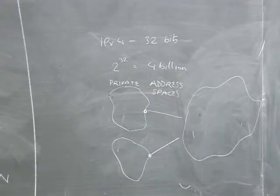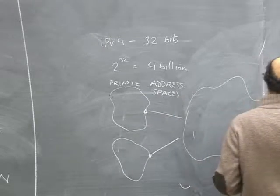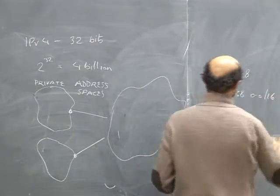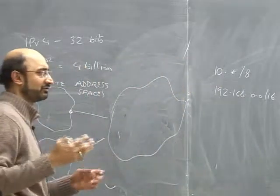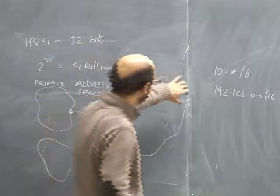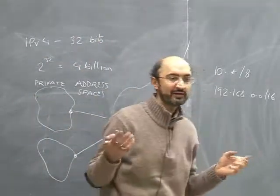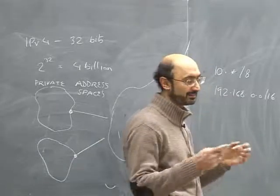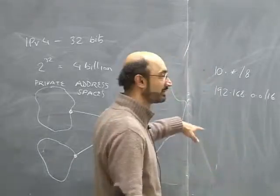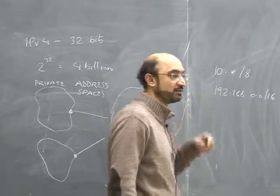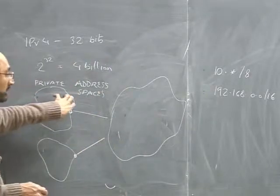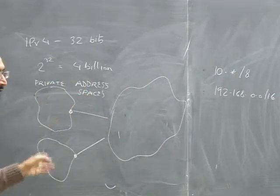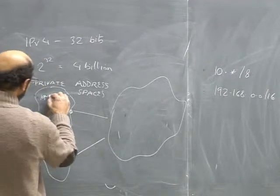There are three ranges of private address spaces in the Internet — three ranges which cannot be used in the Internet core. These are 10.0.0.0 slash 8, 192.168.0.0 slash 16, and 172.something slash 24. Most addresses you'll encounter are in the 192.168 range. If you ever set up a Wi-Fi access point or home gateway, they almost always use 192.168. When many of you did assignment one and ran ifconfig or ipconfig, you were likely reporting a 192.168 address.